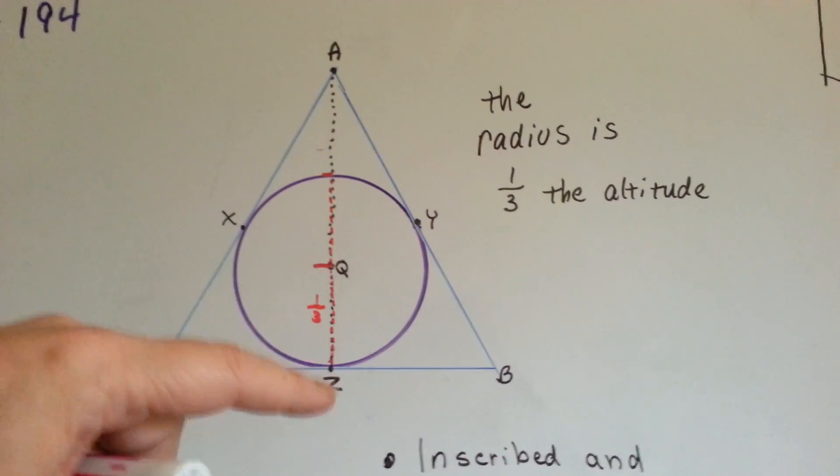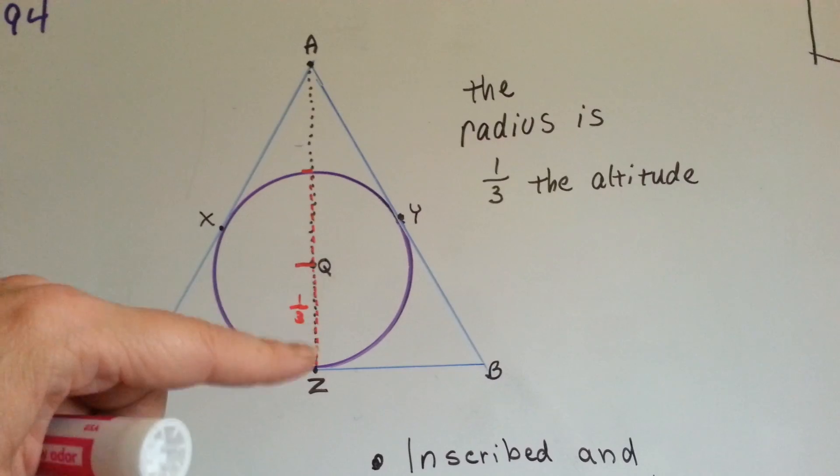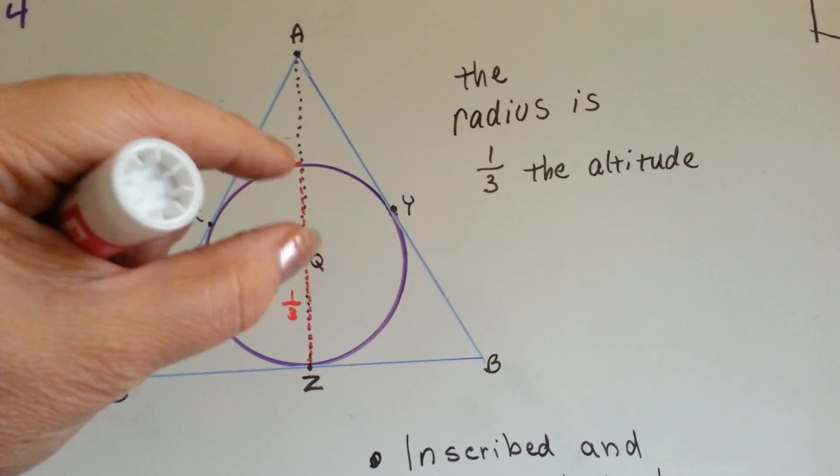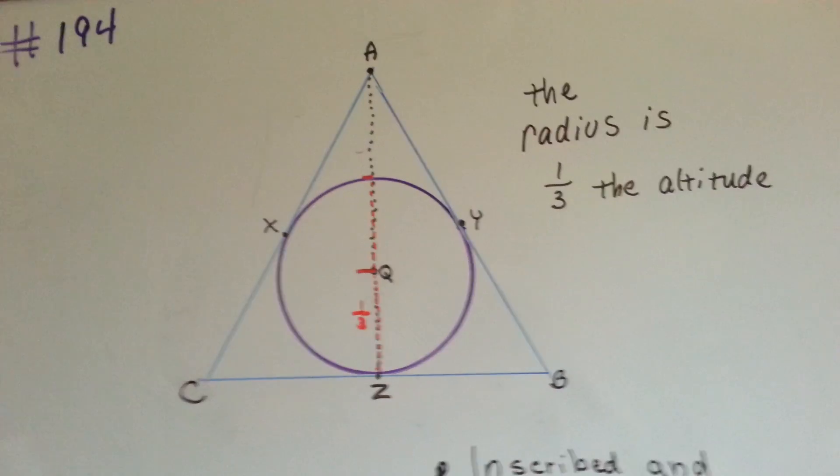This az is the altitude. The radius is one-third of the altitude. See, here's one-third, here's one-third, and here's one-third. So that's our theorem.